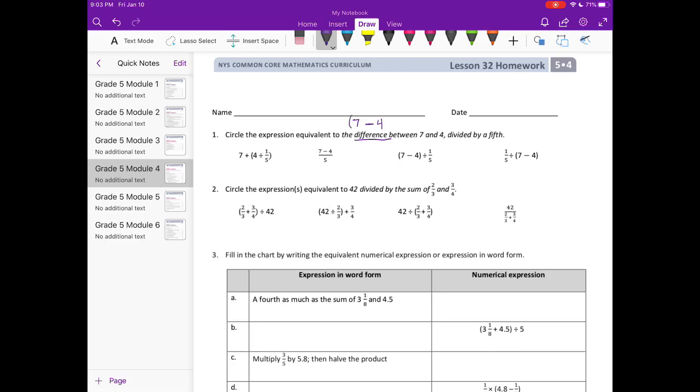So something that's 7 minus 4 divided by 1 5th. So we want to do the difference between 7 and 4 first. So I'm going to put those in parentheses. And then we're dividing by 1 5th. So that looks like this one.